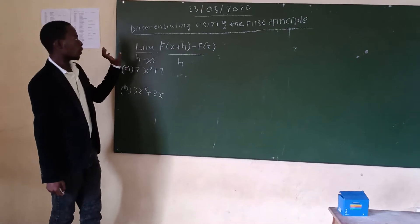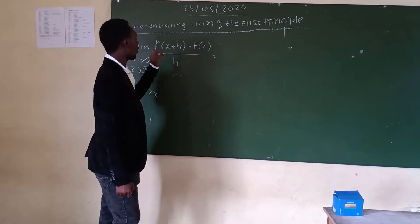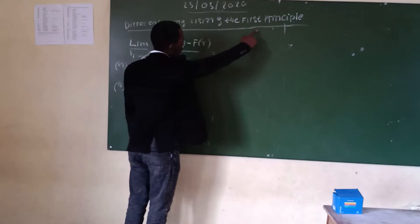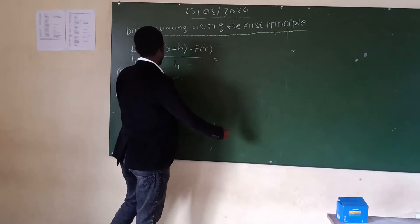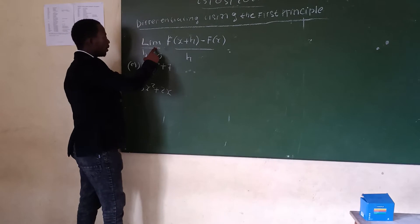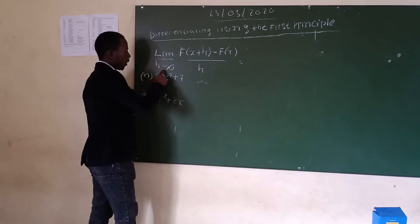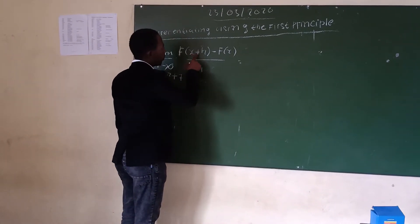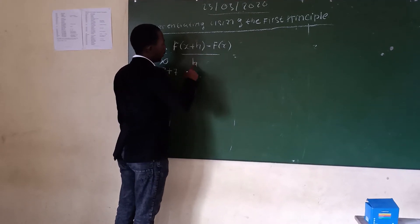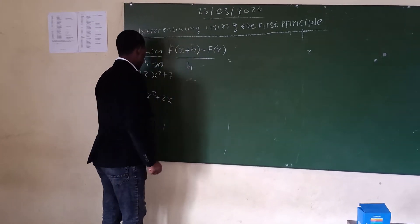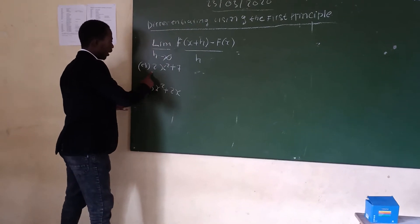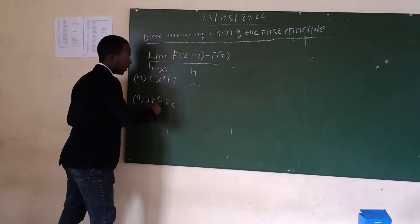The first thing we are going to do is solve using the first principles. In the first principle, the general formula is: limit as h approaches 0 of f(x plus h) minus f(x), divided by h. Our first example is f(x) equals 2x squared plus 7.